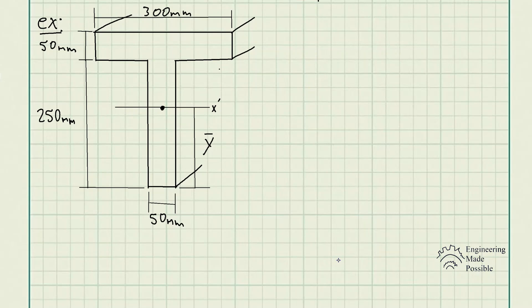For this example, we have the problem statement: determine Y-bar, which locates the centroidal axis X prime for the cross-sectional area of the T-beam, and then find the moment of inertia about the X prime axis.